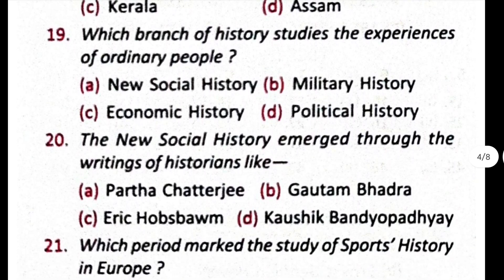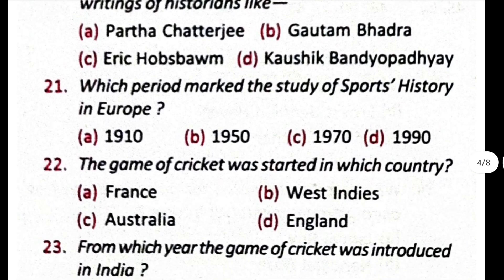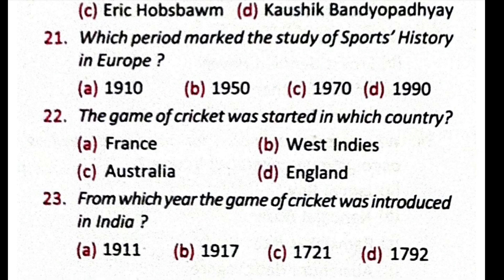Question number 19: which branch of history studies the experiences of ordinary people? Option A, new social history. Question number 20: the new social history emerged through the writing of historians like — the correct option is C, Eric Hobsbawm. Question number 21: which period marked the study of sports history in Europe? The correct answer is A, 1910.